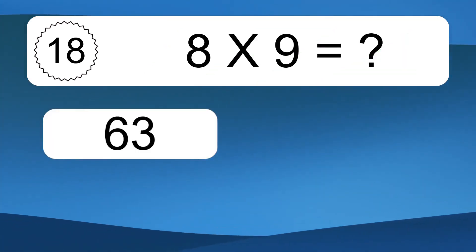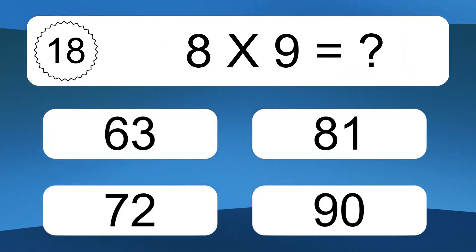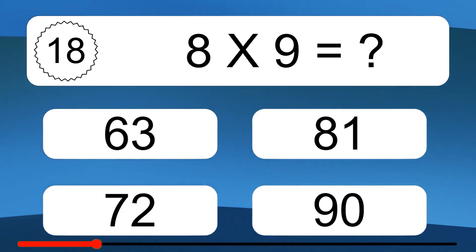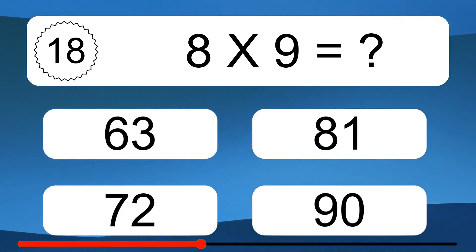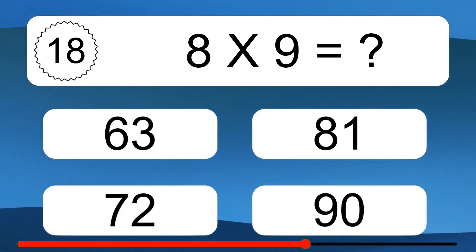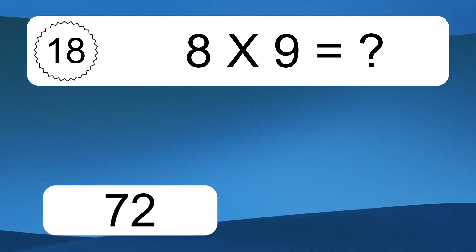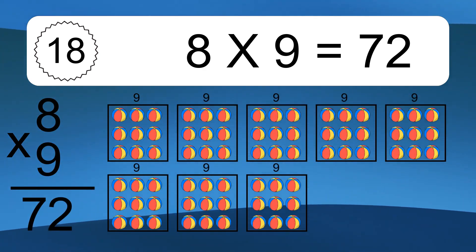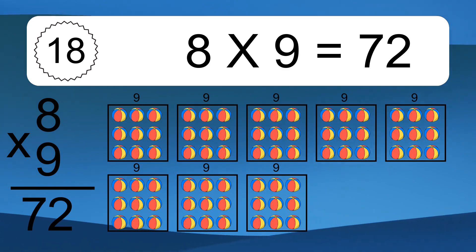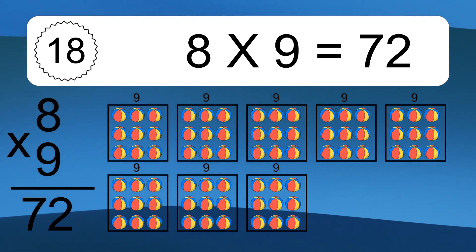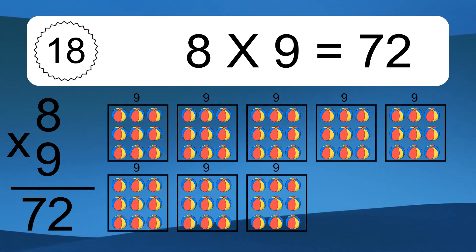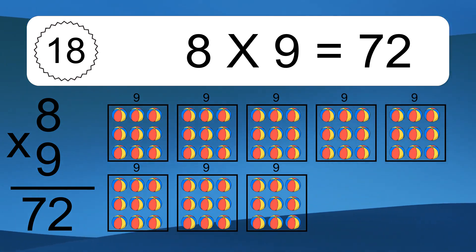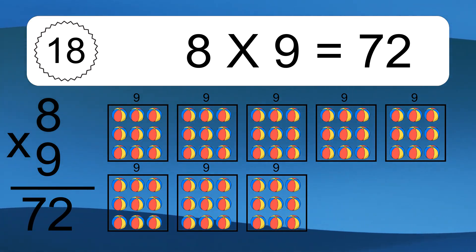Eight times nine equals what? Eight times nine equals 72. We have 8 boxes, and each box has 9 colorful balls inside. If you count all the balls in all the boxes together, you will have 8 times 9 balls. This equals 72 balls.